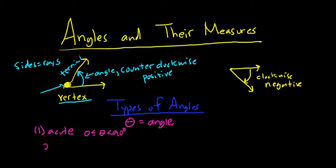A right angle is when theta is equal to 90 degrees. Then we have something called an obtuse angle. So an obtuse angle is going to be bigger than 90 degrees but less than 180 degrees.